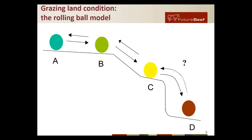Moving from B to C means there'll be a little bit more effort required to return, and it could take more time and require a bigger change in management. As you can see, moving from C to D can be a fairly quick process, but once you're in D condition it's very difficult to get back to C. Often you can't do this with grazing management alone — you need some kind of mechanical intervention, and it might not even be possible especially if your soil condition has deteriorated. So basically the message is: try and keep it in A and B, and if it slips to C, don't let it go to D.